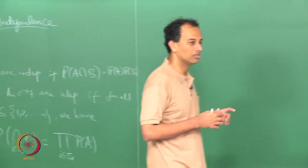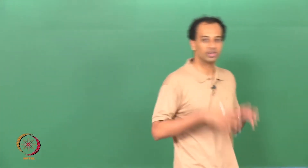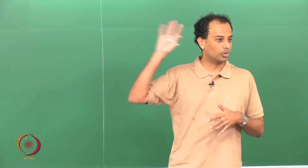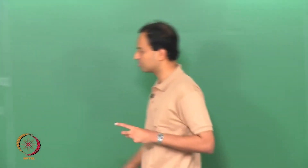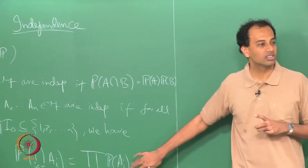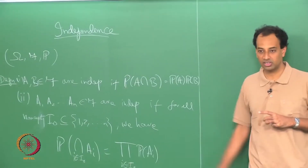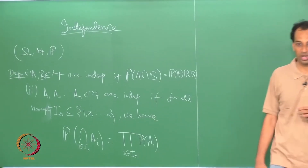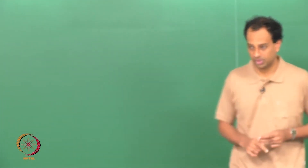You can also create examples where the probability of A1 intersection A2 intersection A3 products out, but one of the pairs does not product out. All these are possible. You have to have all 2^n minus n minus 1 equations verified in order to assert that n events are independent.